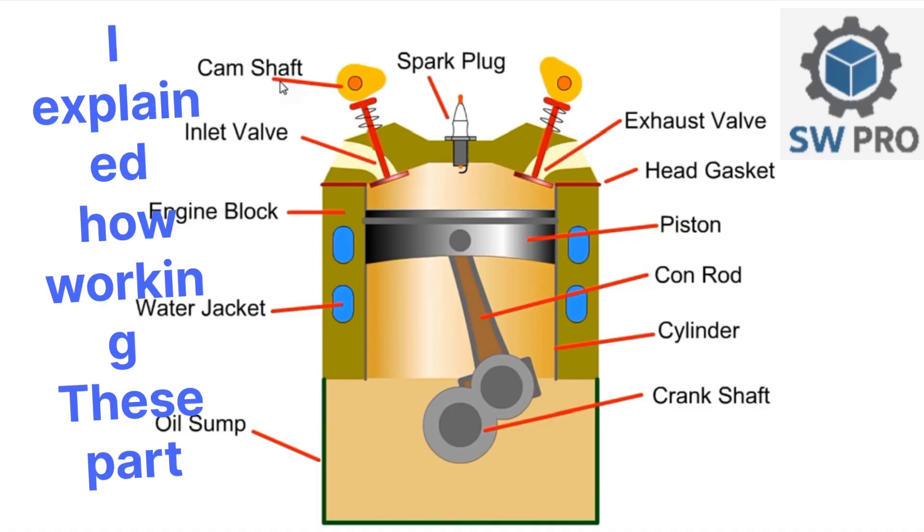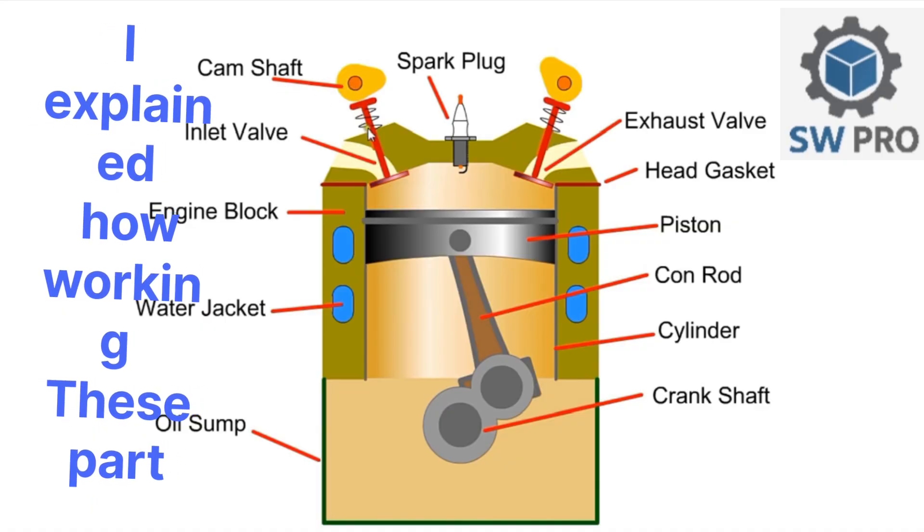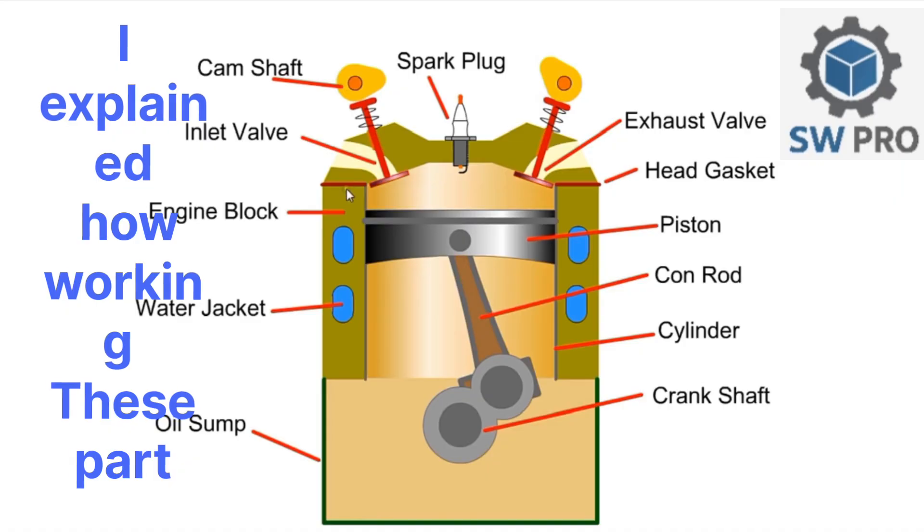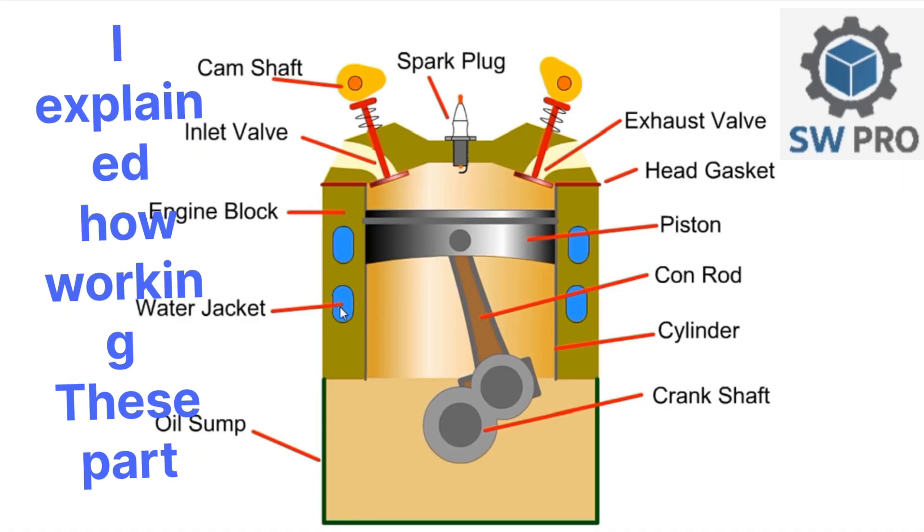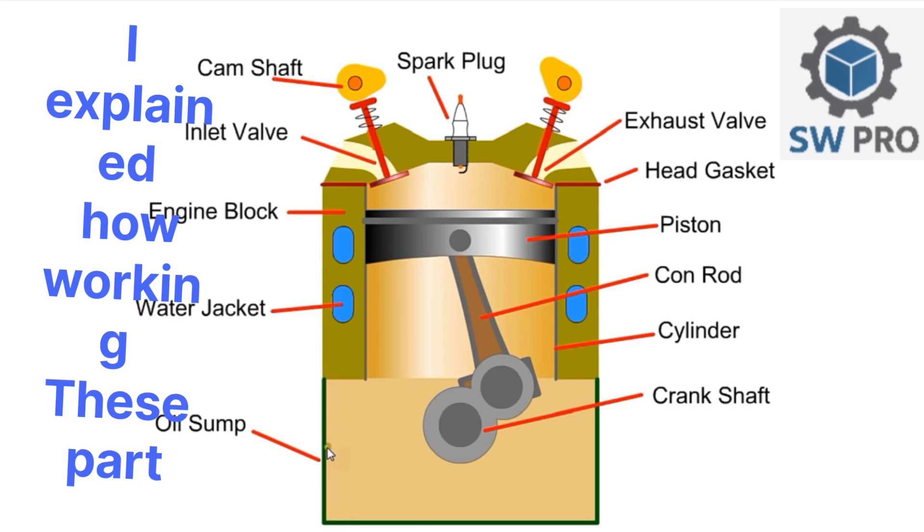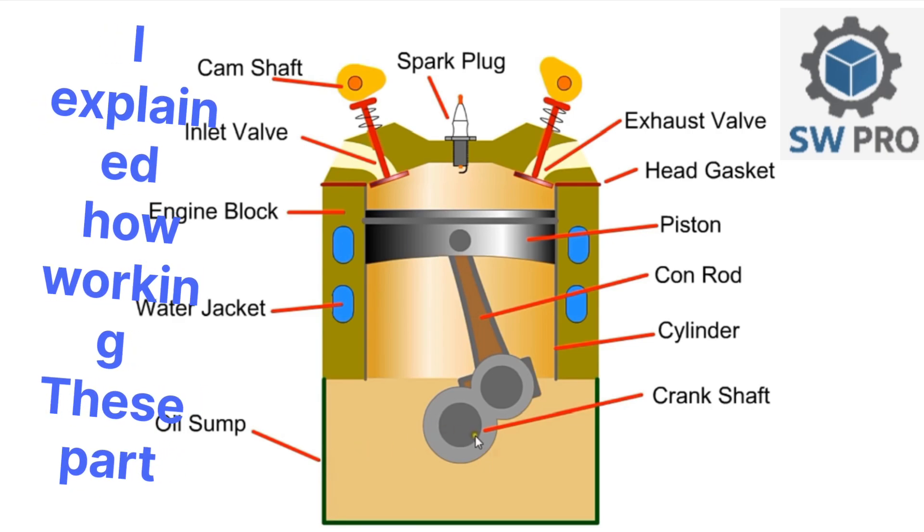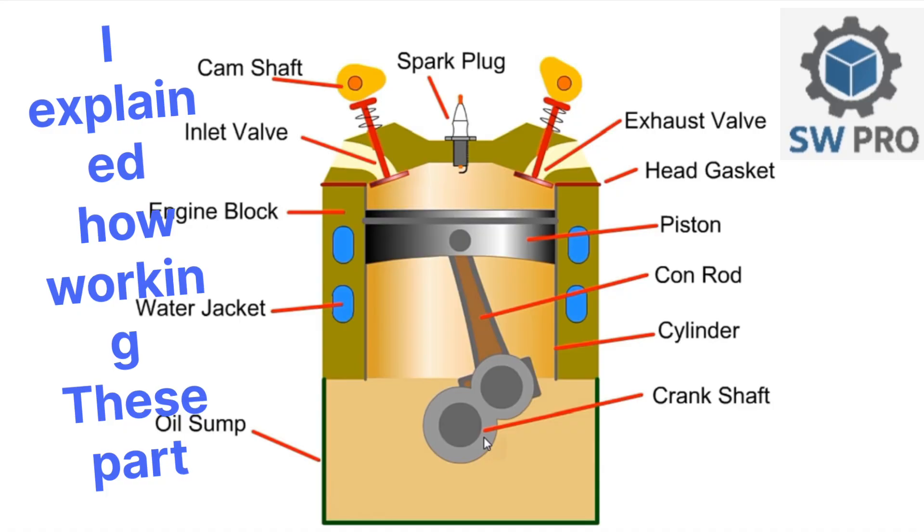At the top we have the camshaft, which controls the inlet valve allowing fuel and air into the cylinder. The block houses the main components of the engine and is cooled by the water jacket. Oil is stored in the sump and is used to lubricate the engine. The crankshaft is supported by bearings at the bottom of the engine.